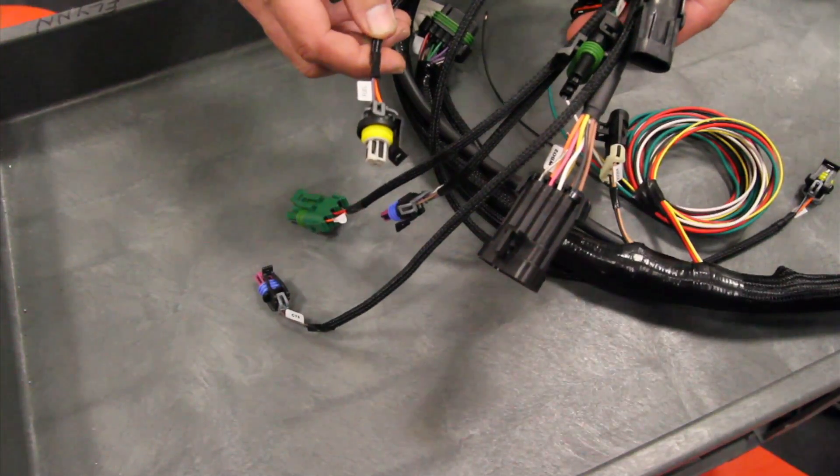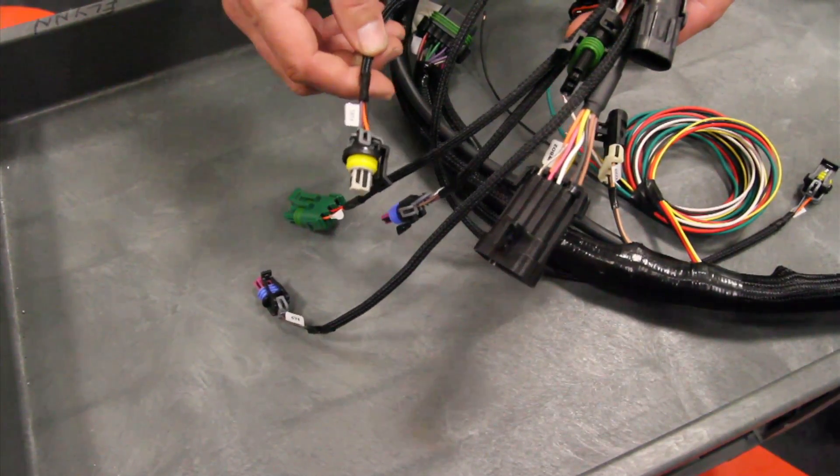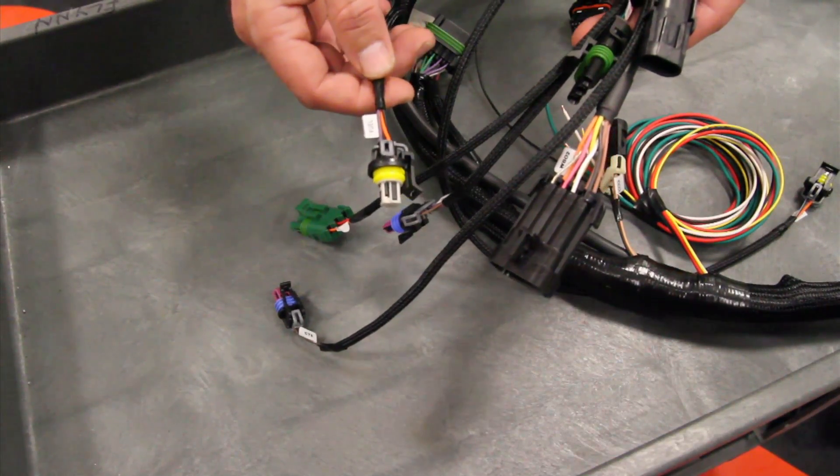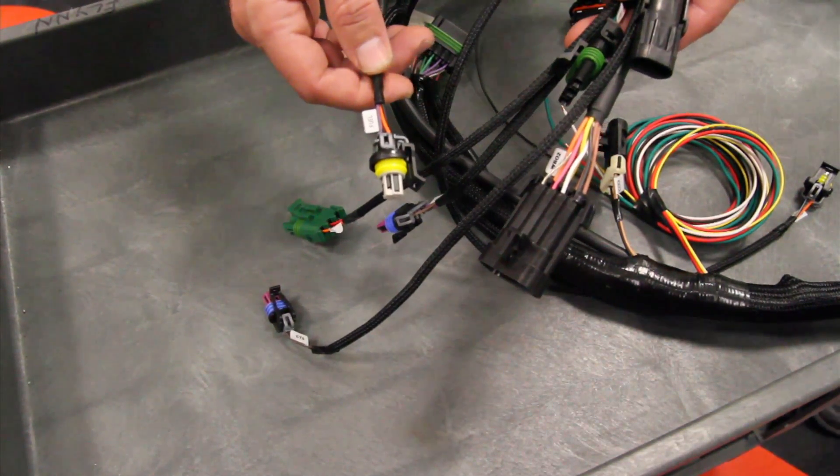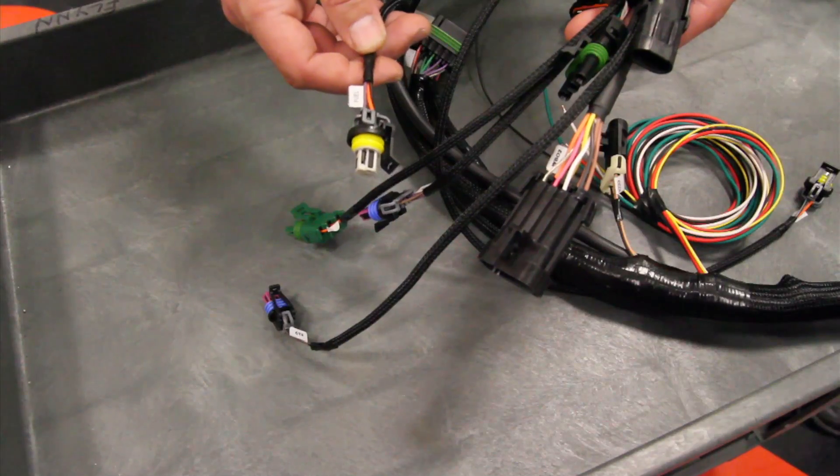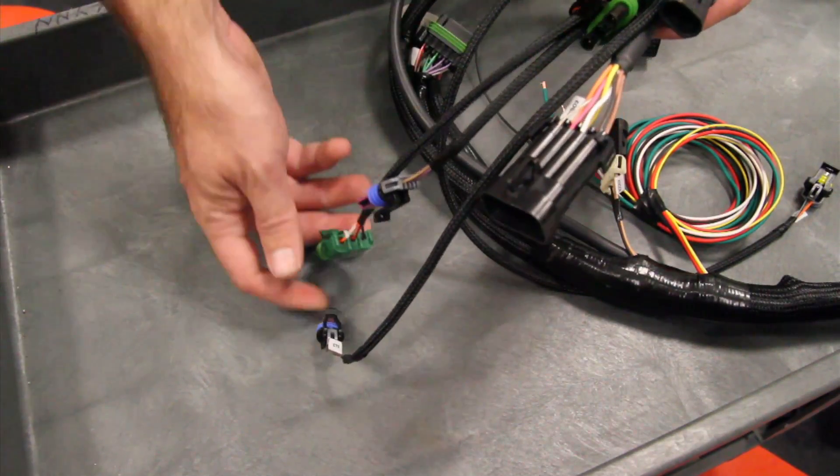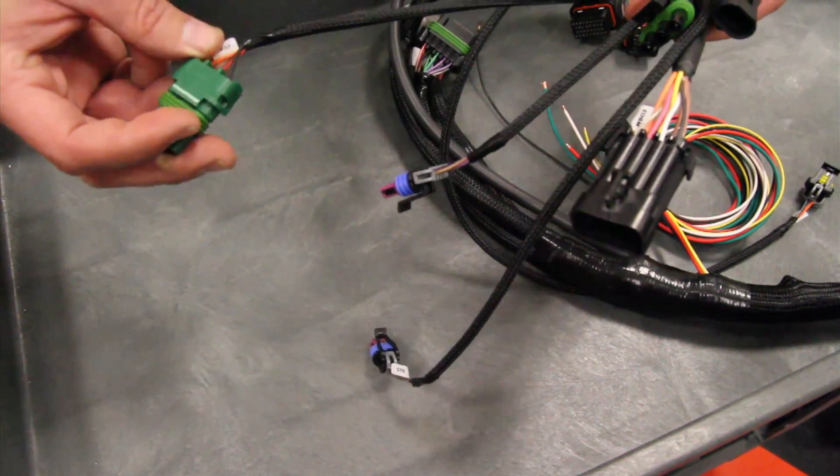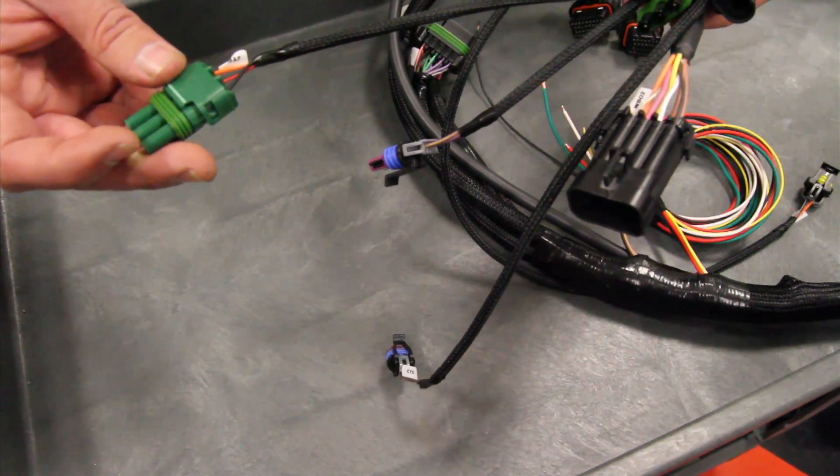The following connectors all plug into the various sensors. They're all labeled. This one's labeled fuel. It plugs into an optional fuel pressure transducer if you want to monitor fuel pressure. This is labeled MAP for MAP. That's the MAP sensor.